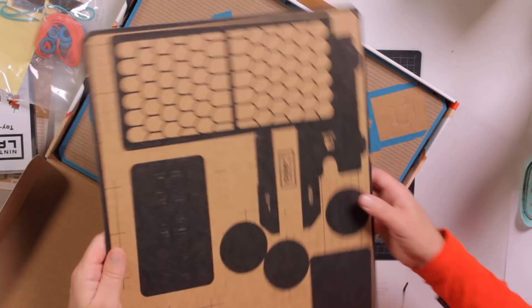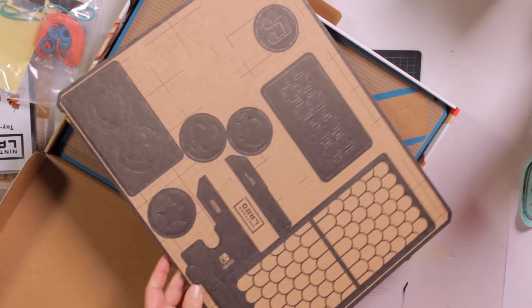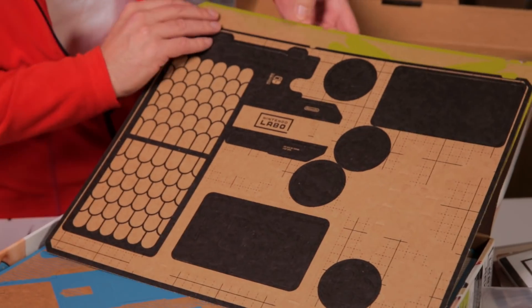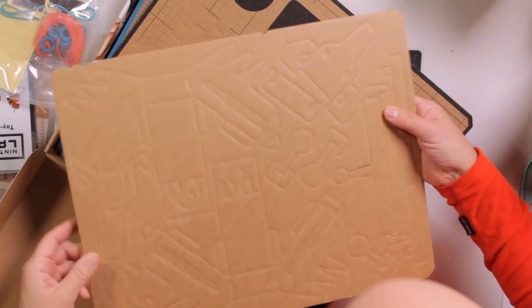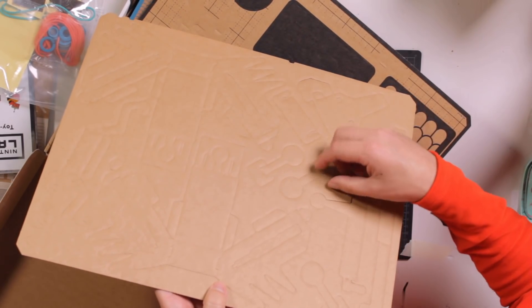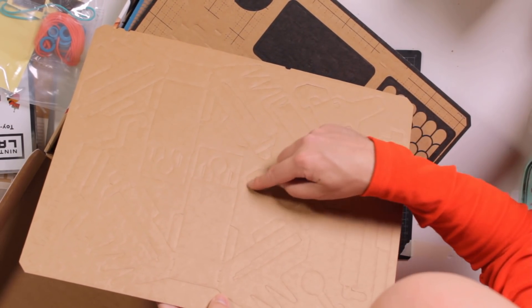And what else do we find? We find pop-out cardboard sheets. Two sheets. One green. I should be able to, oh yeah. This is nicely, what I call it, die cut here.